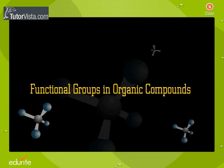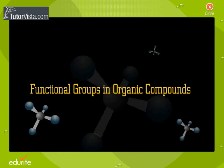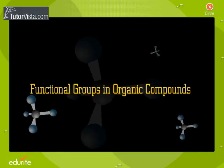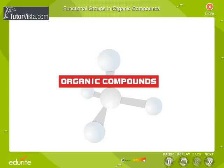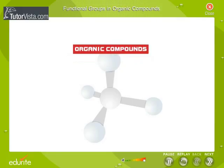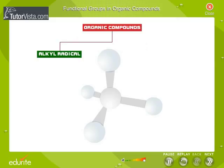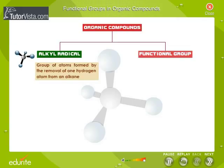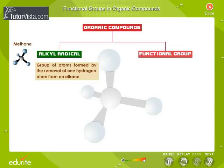A given organic compound is made up of two parts: an alkyl radical and a functional group. An alkyl radical is a group of atoms formed by the removal of one hydrogen atom from an alkane.